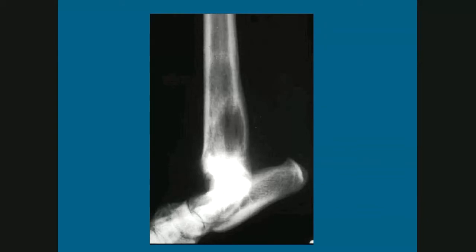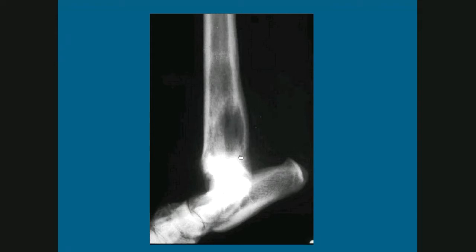This is an example of an osteosarcoma in a small breed dog. Applying the principles of aggressive bone lesions, this almost looks like geographic lysis with a little thinning and bulging of the cortex but no periosteal reaction — appearing only mildly aggressive. However, remember that in small breed dogs, osteosarcomas behave quite differently.